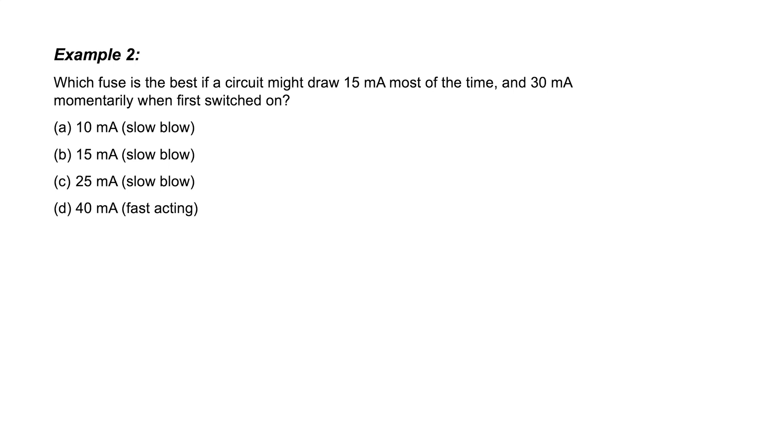C would probably work just fine. This circuit is only going to be using 15 milliamps most of the time. So if I take 15 and divide it by 0.75, I get 20 milliamps. This means that a 20 milliamp fuse would typically be suitable for this circuit. A 25 milliamp slow blow fuse would certainly work, too.